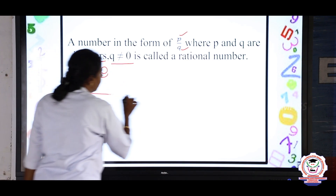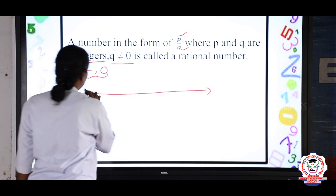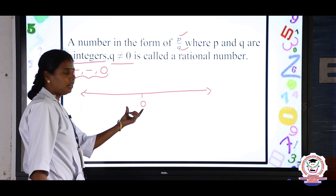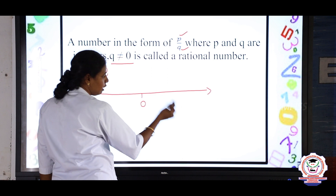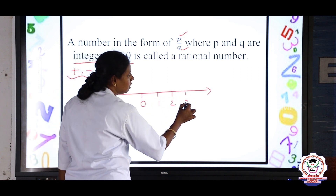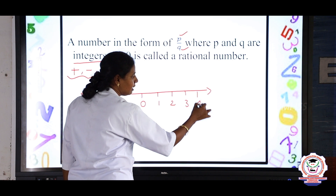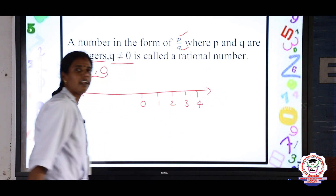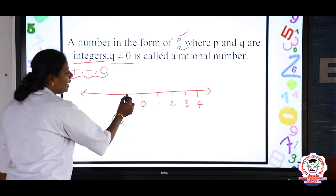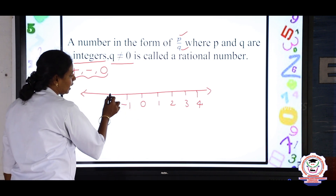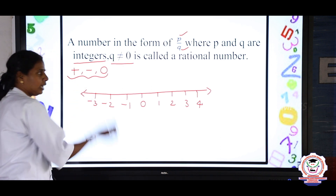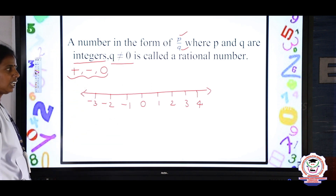First, we can mark integers on a number line. At the middle it will be 0, and on the right side of 0 it will be positive: 1, 2, 3, 4 and so on. We can write an infinite number of numbers on the right side of 0. On the left side of 0 are negative numbers: minus 1, minus 2, minus 3, and infinite negative integers also we can write.